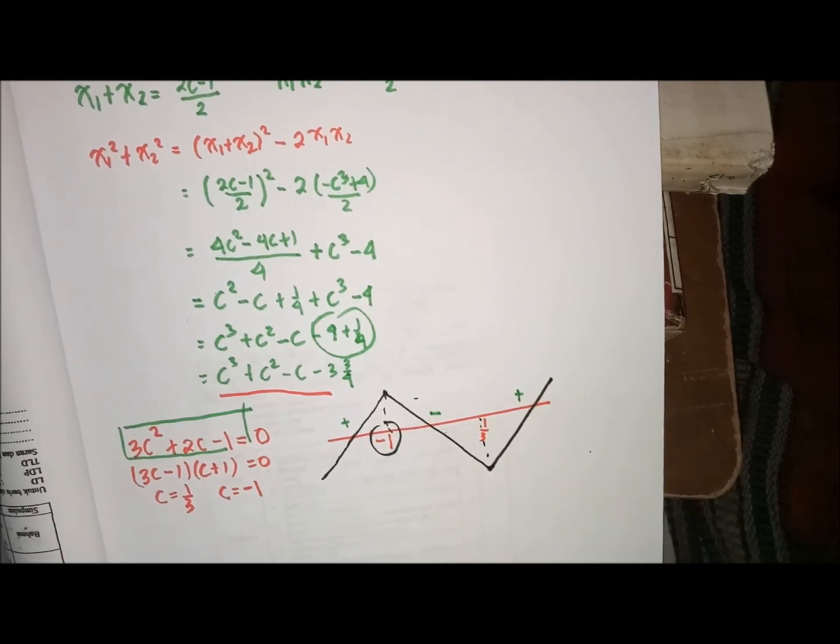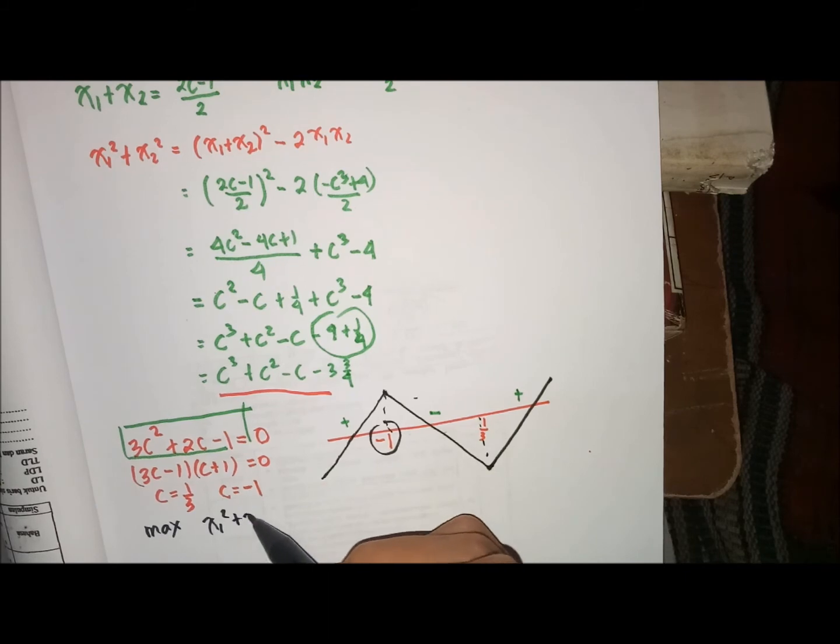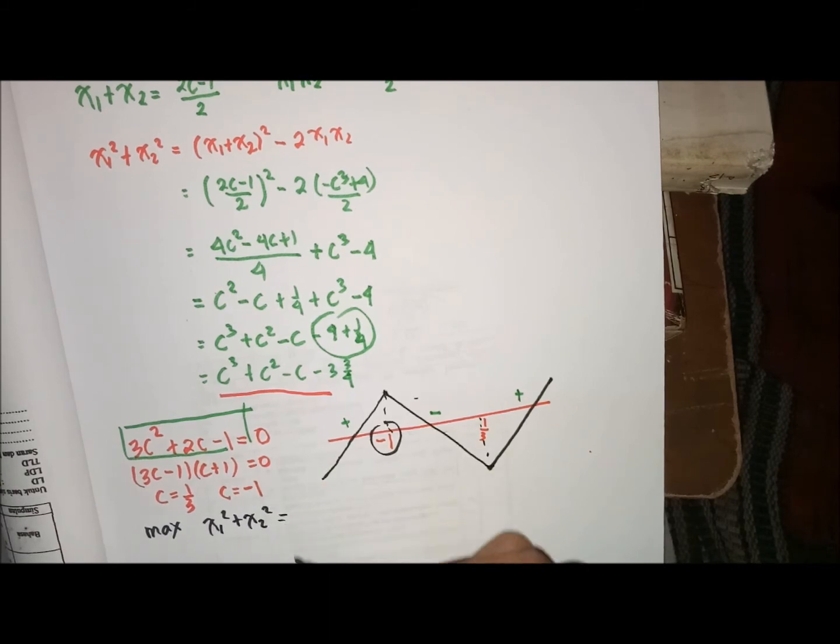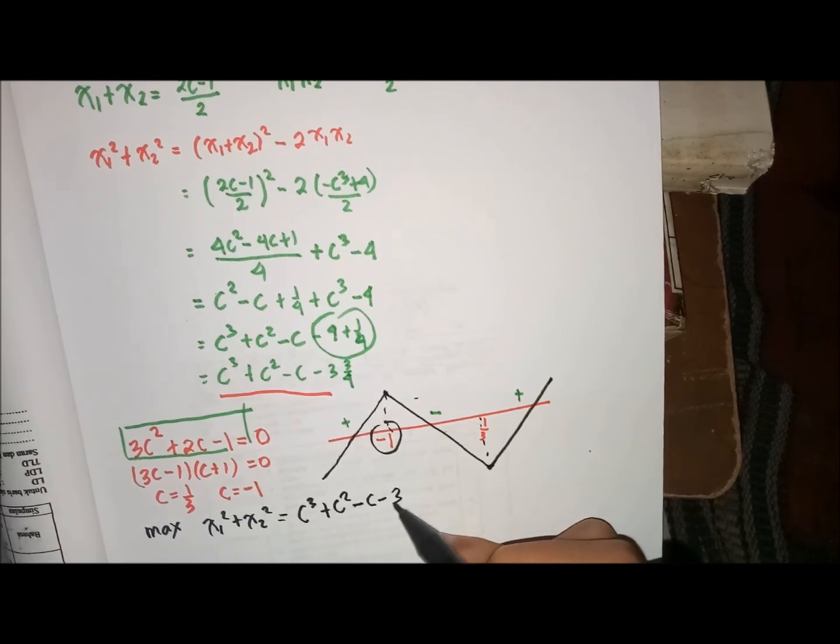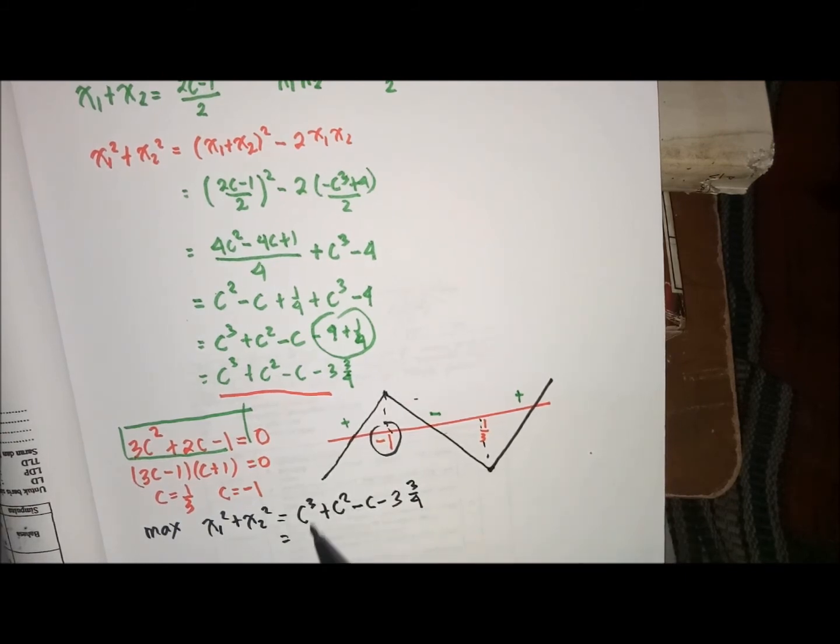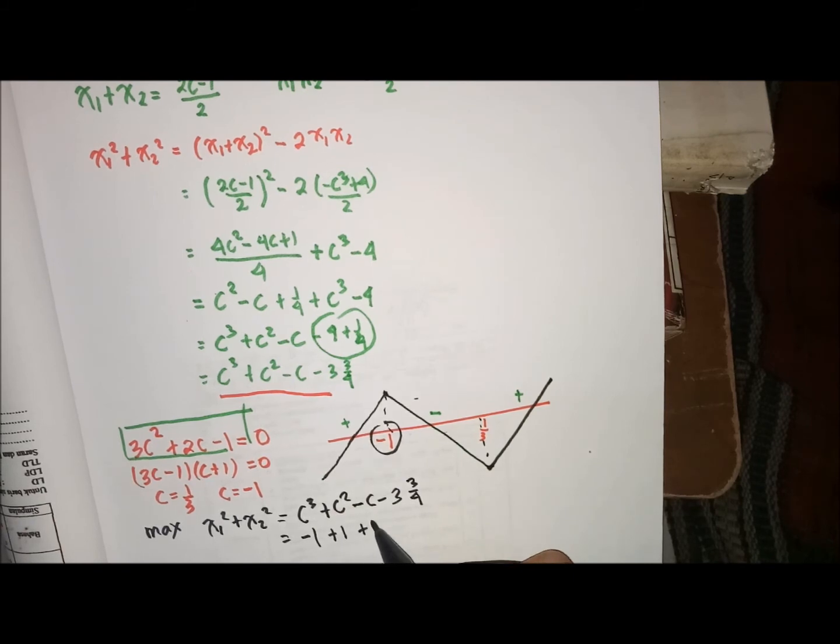Sehingga ketika ditanya adalah maksimum dari X1 kuadrat plus X2 kuadrat, itu miliknya C pangkat 3 plus C kuadrat min C min 3 3 per 4. Maka C-nya diganti min 1, berarti min 1 plus 1 plus 1 min 3 3 per 4.